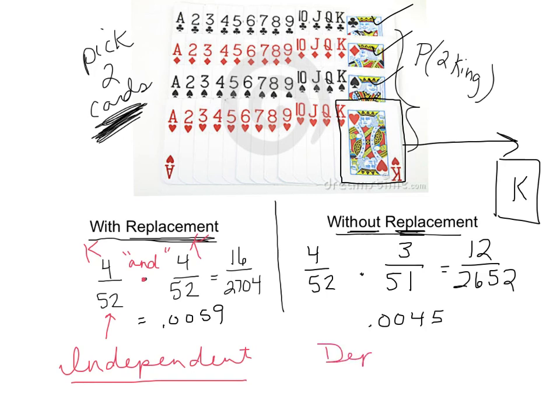Otherwise, for two things to be dependent events, that would be when the second event is affected by what happened in the first. That happened to us here. Our second fraction was different because we chose a king first. Those are dependent, and we have to adjust our second fraction accordingly. But it is what we call and probability. We do multiply the two events together.